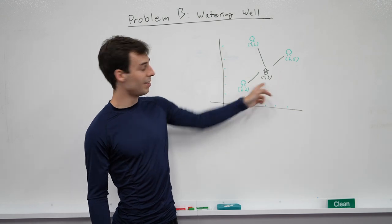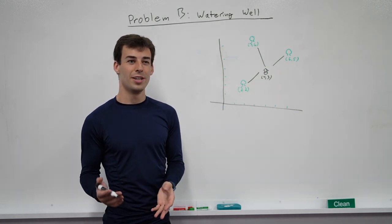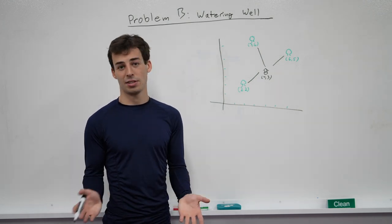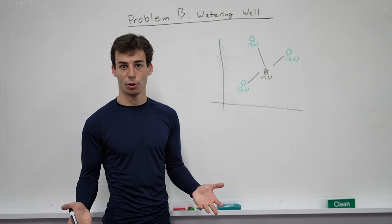Obviously, we could just calculate the distance between each tree and each well, but that would be n squared. It'd be n times q, and when each of those are 500,000, that's going to be too much for our program to handle.